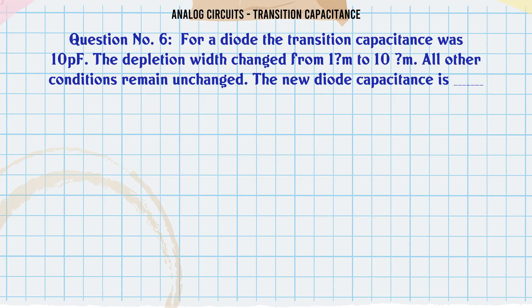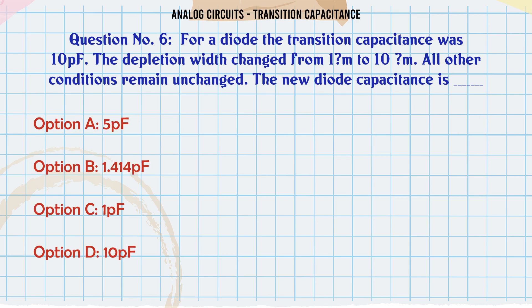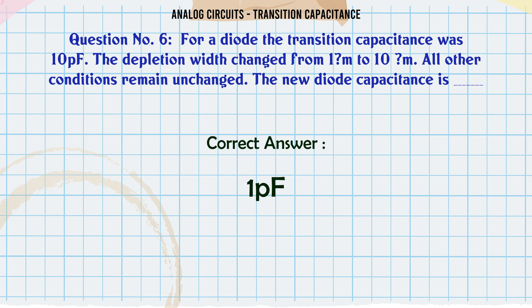For a diode, the transition capacitance was 10 PF. The depletion width changed from 1 μm to 10 μm. All other conditions remain unchanged. The new diode capacitance is: A: 5 PF, B: 1.414 PF, C: 1 PF, D: 10 PF. The correct answer is 1 PF.